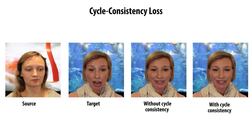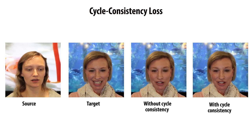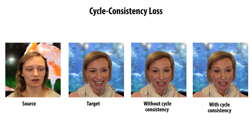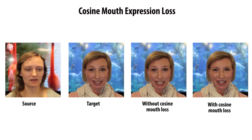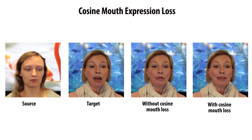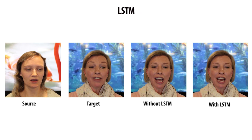We now evaluate the different components of our system in an ablation study. Removing the cycle consistency loss generates significant artifacts. Toto, I've got a feeling you're not in Kansas anymore. I'm ready for my close-up. Without the cosine expression loss, results can contain noticeable audiovisual misalignment. Frankly, my dear, I don't give a damn.